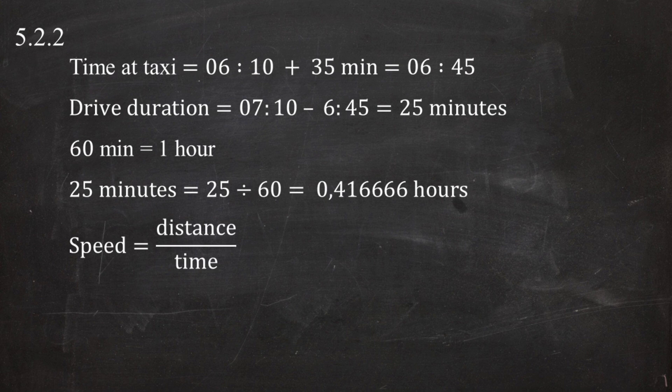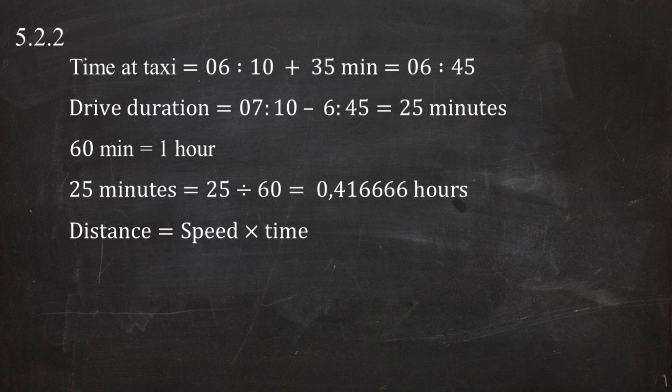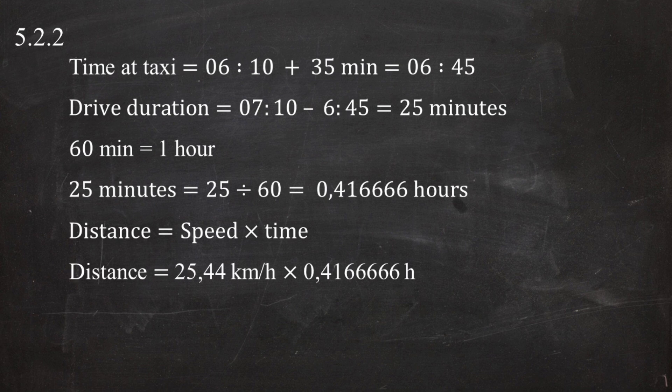From the formula, speed equals distance divided by time, which rearranges to distance equals speed multiplied by time. Substituting the speed of 25.44 km/h and the time of 0.416666 hours gives a total distance from the airport to the stadium of 10.6 kilometers.